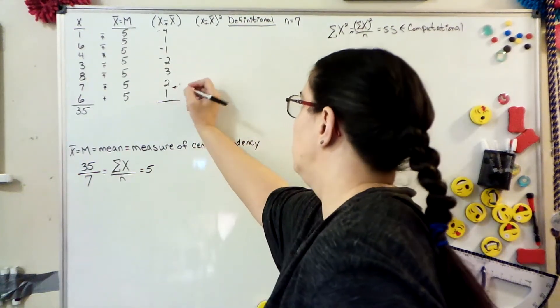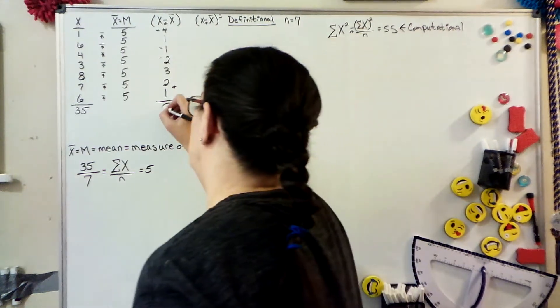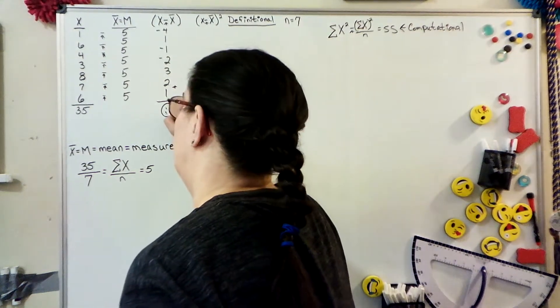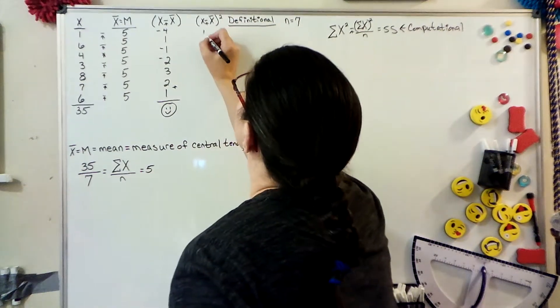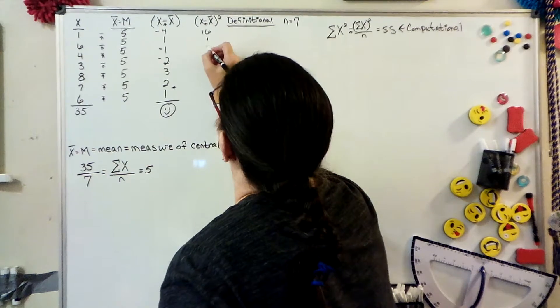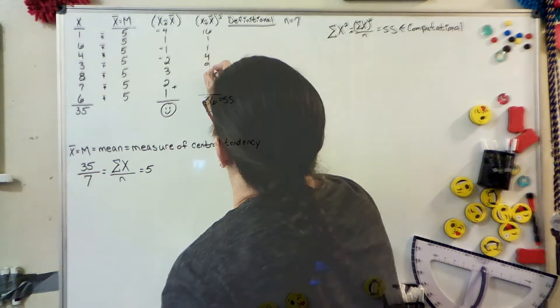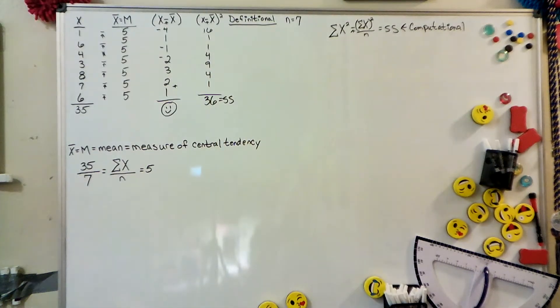The next thing we do to pull it away from zero is square each deviation. Then you add them up. This comes to 36. That is your SS. It is literally the sum of the squared deviations.